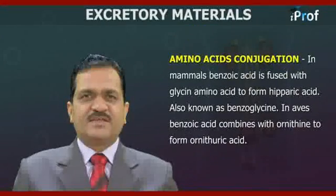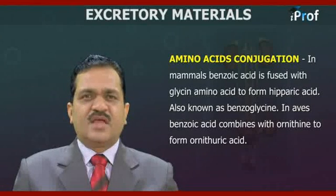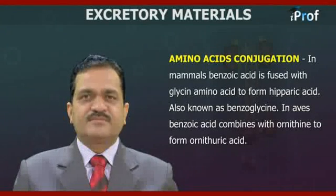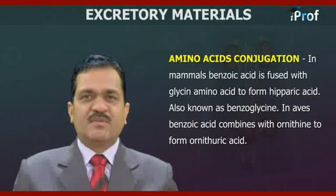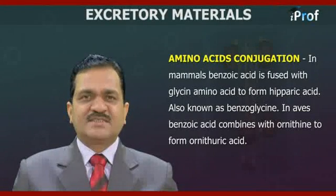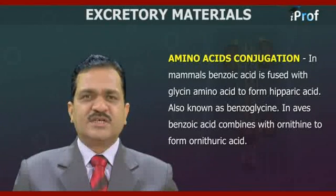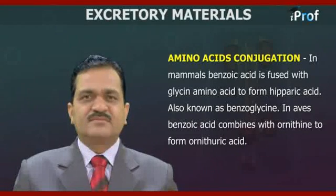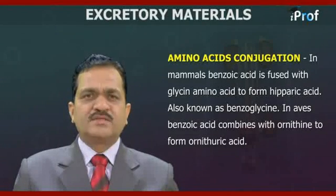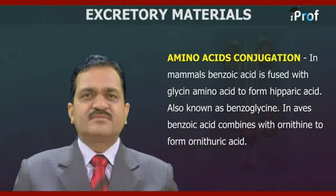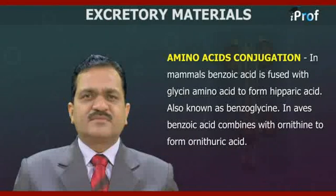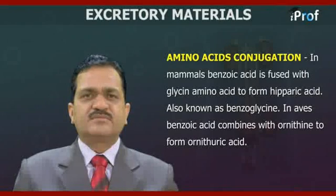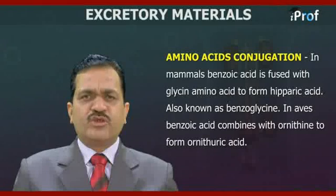Another excretory material is amino acid conjugation. In mammals, benzoic acid is fused with glycine amino acid to form hippuric acid, also known as benzoylglycine. In aves, benzoic acid combines with ornithine to form ornithuric acid.